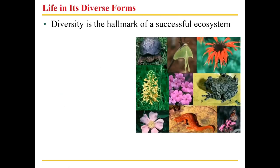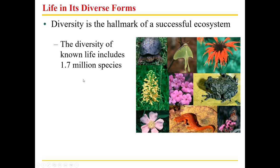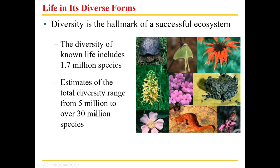Life in its diverse forms — diversity is the hallmark of a successful ecosystem. Diversity means how many different kinds of things you see, and hallmark means a key indicator. A rainforest has lots of different kinds of organisms — very successful. But a downtown urban area has much fewer. The diversity of known life includes approximately 1.7 million species, though estimates of total diversity, if we could find every living thing on the planet, range from 5 million to over 30 million species.